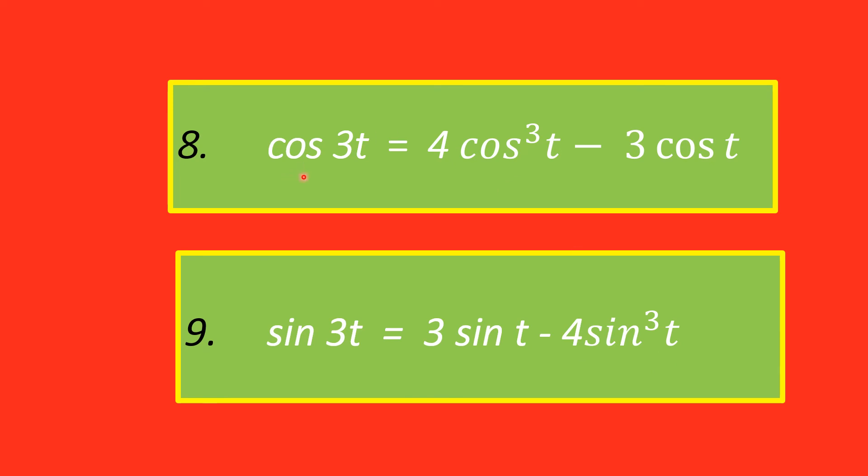When you have cos 3t on the left hand side, then 4 cos cube t will come in the beginning, and when you have sin 3t towards the left hand side, you will have 4 sin cube t with the minus sign but not in the beginning. In the beginning you will have 3 sin t here, and you have 3 cos t here at the back side.